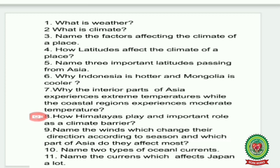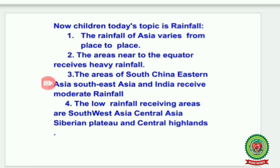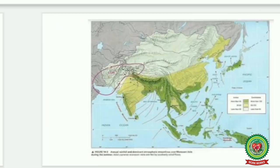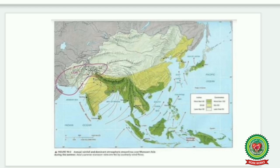Now today we are going to start with our today's topic, that is rainfall. The rainfall of Asia varies from place to place. The areas near to the equator receive heavy rainfall. The areas of South China, Eastern Asia, Southeast Asia, and India receive moderate rainfall. The low rainfall receiving areas are Southwest Asia, Central Asia, the Siberian plateau, and Central Highlands.